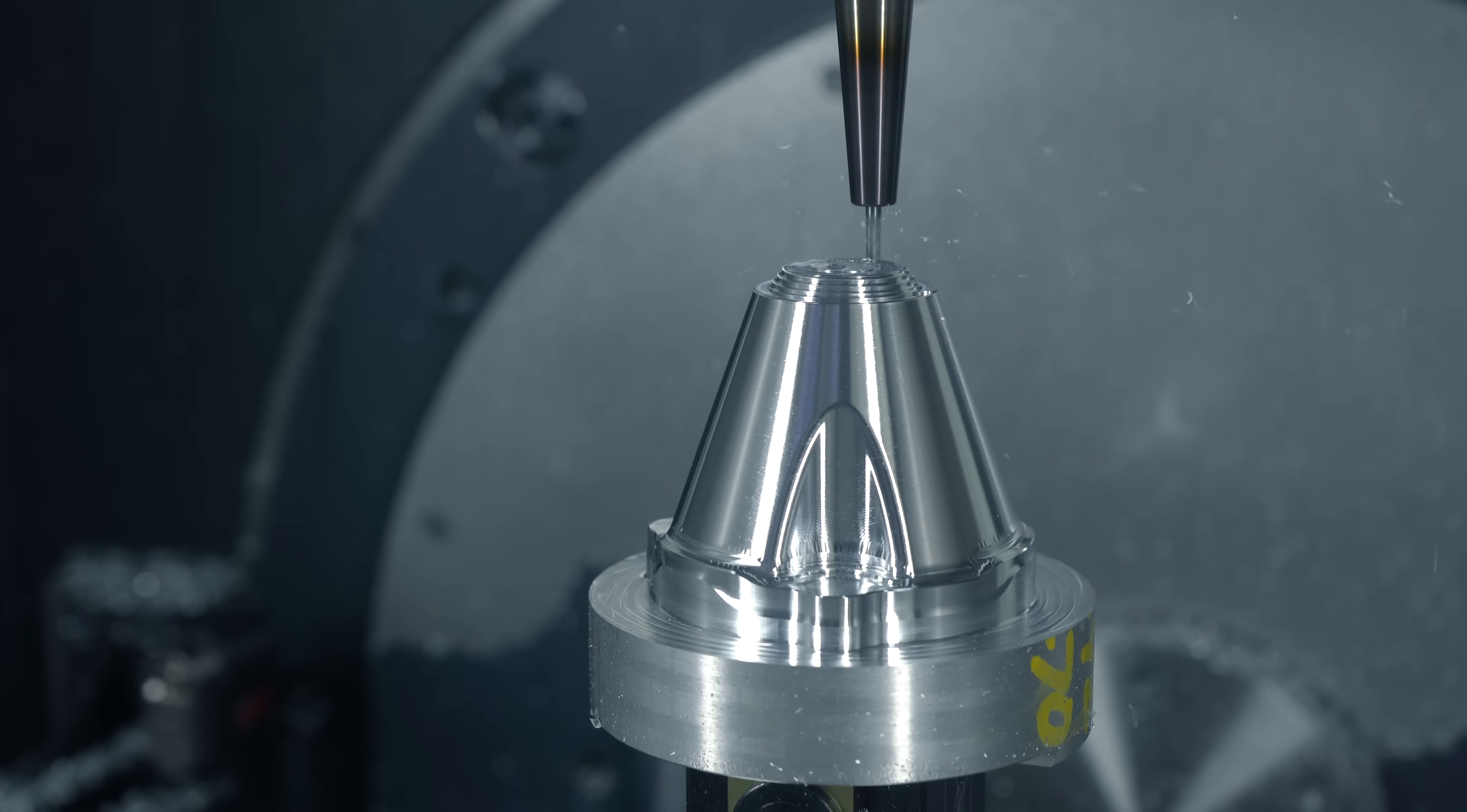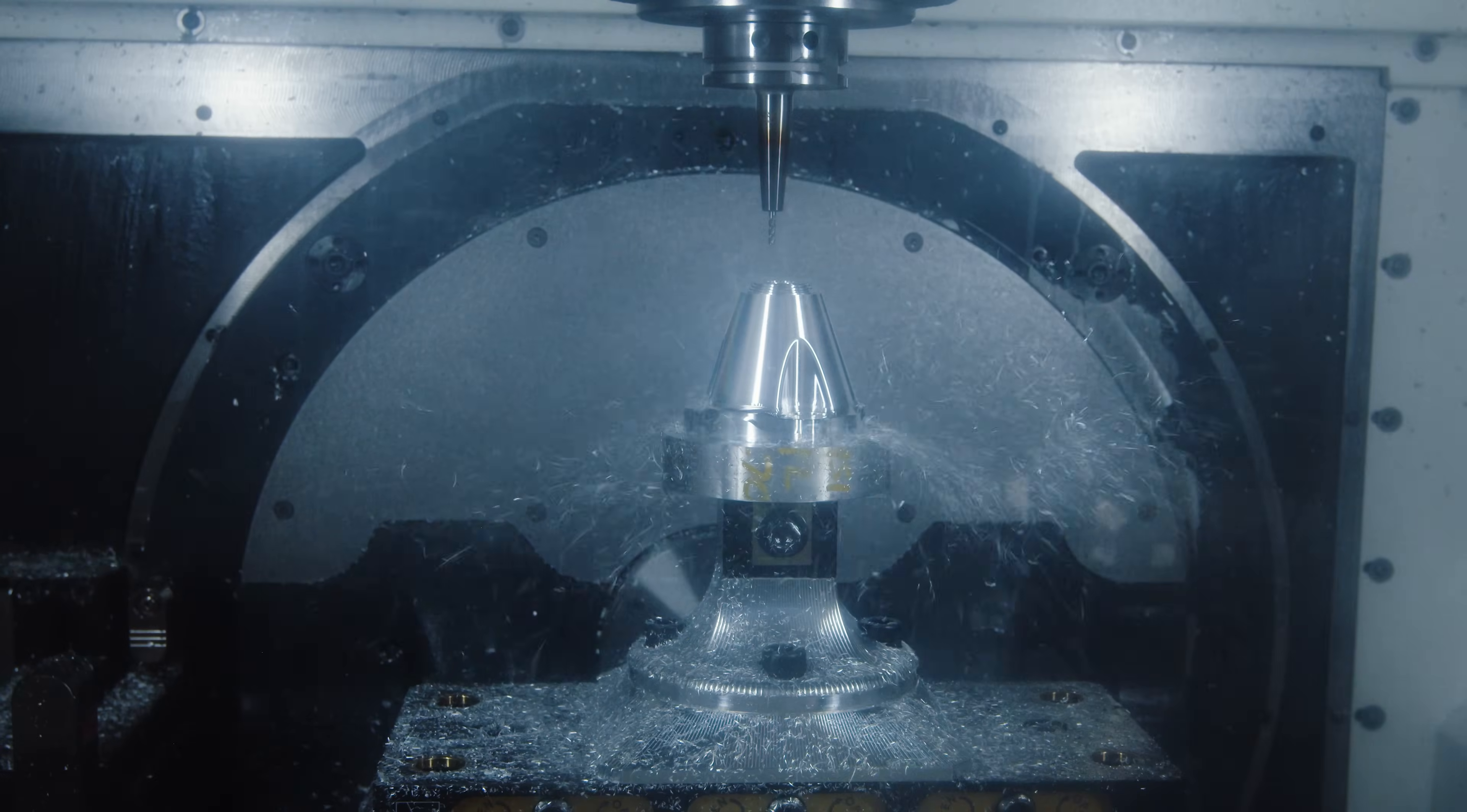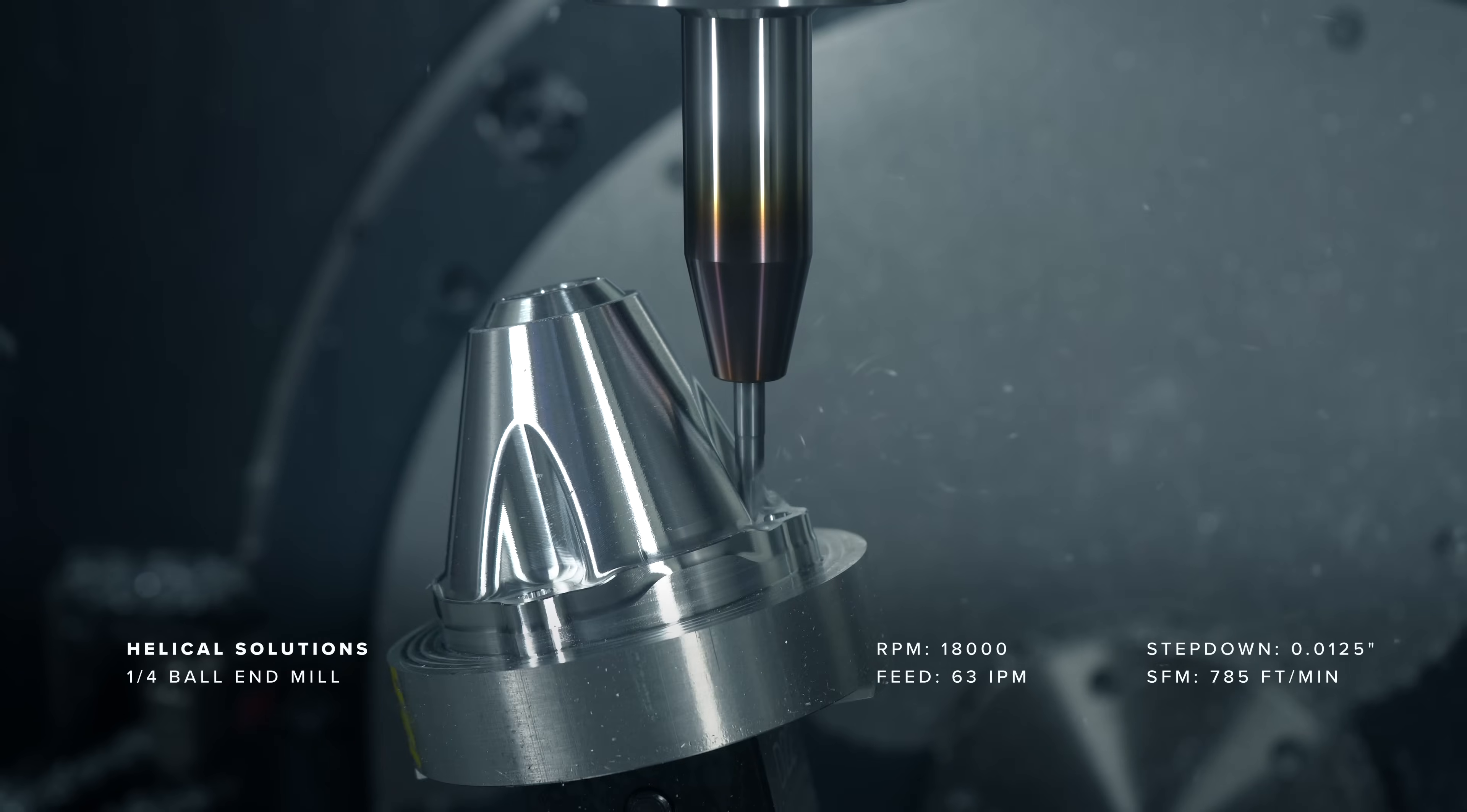We wrap up op 1 with a couple more five axis swarf passes to complete the underside of the part. Two to rough and finish, and one final path to nearly separate the part from the remaining stock, very similar to a lathe part off operation.